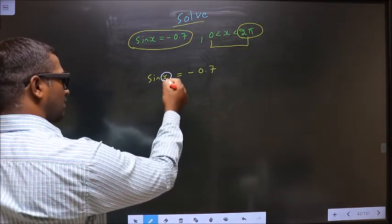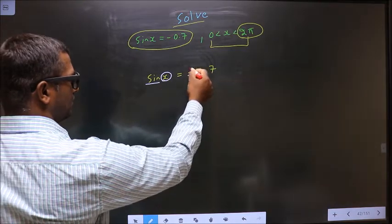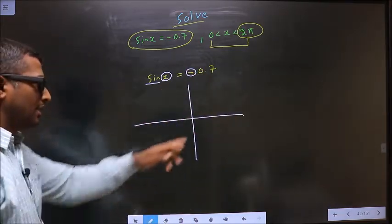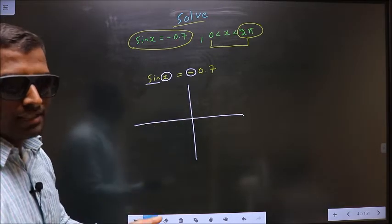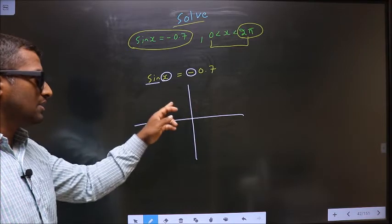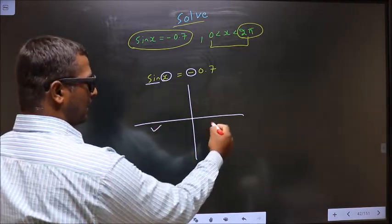To get the values for x, here you have sin and here you have negative. So now you check in what all quadrants is sin negative. It is all silver tea cups. So sin is negative in the third and in the fourth.